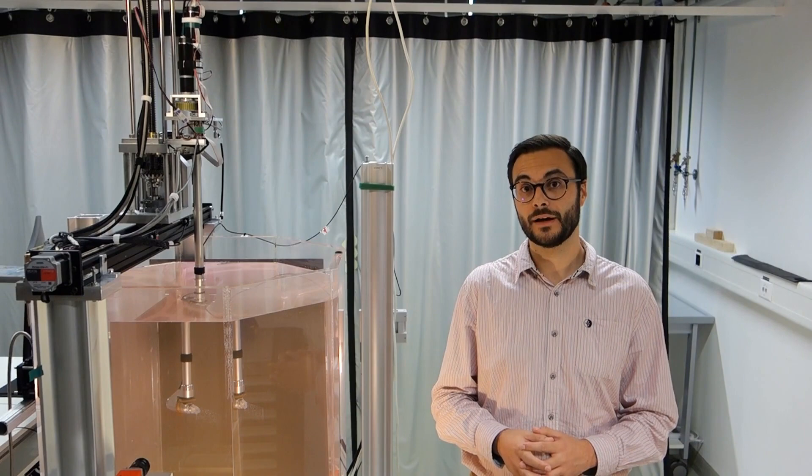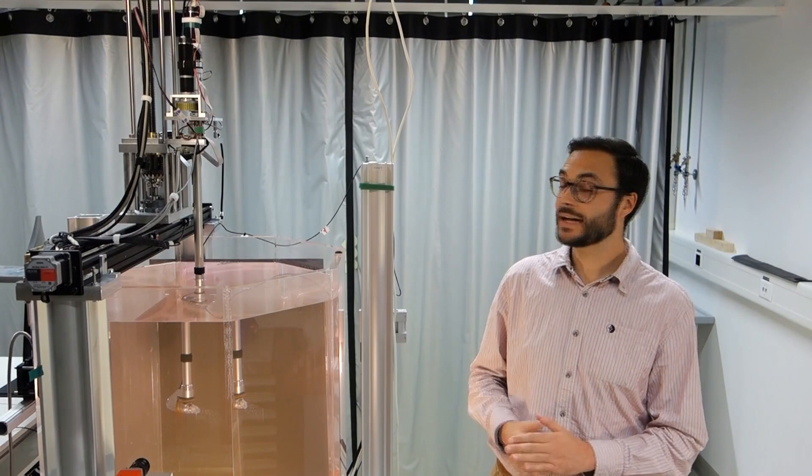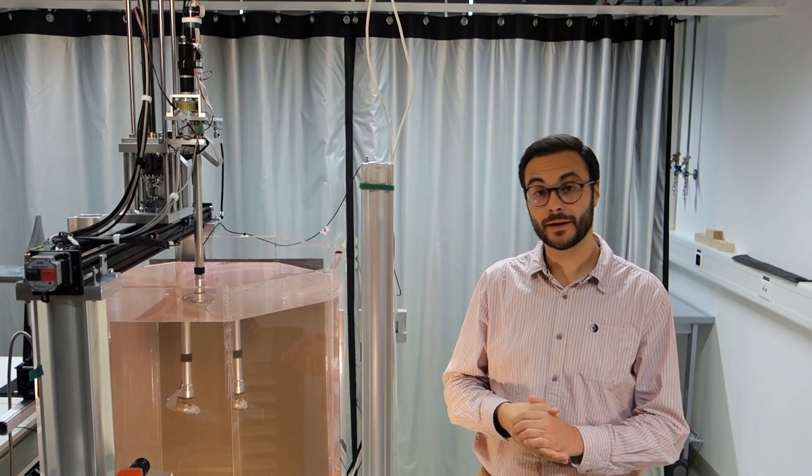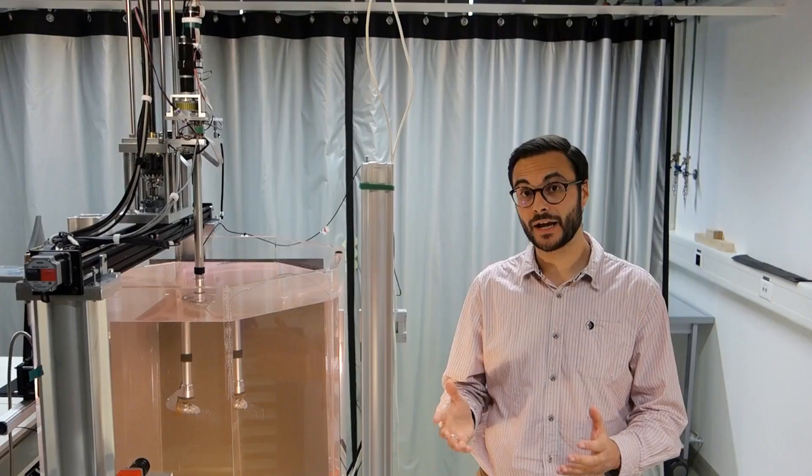We have designed and built a mechanical flapping wing device which is activated by two motors at the top. They control the stroke and the pitch axis of the wing. At the wing root, we installed a force and torque transducer which records the aerodynamic forces experienced by the wing throughout the motion.